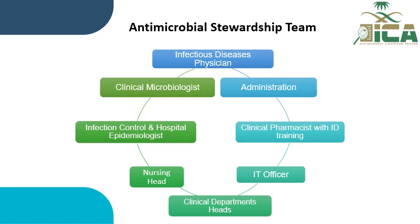The IT staff are also critical in integrating the ASP protocols into the workflow at the point of care — for example, antibiotic order sets and access to facility-specific guidelines. The pharmacist helps to develop, approve, and implement antibiotic policies that improve antibiotic use in the hospital, according to sub-elements C3.2 and C3.3 in the ICA. Highly effective ASPs have strong engagement of the pharmacist with ID training, either as leader or co-leader.